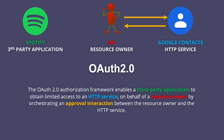Spotify did not ask me for my Google password. Instead, Spotify sent me over to Google's OAuth server where I authenticated myself, and then I was sent back to Spotify. That separation between Spotify and Google contacts is what is called the approval interaction, and that is essentially what makes OAuth 2.0 OAuth 2.0.